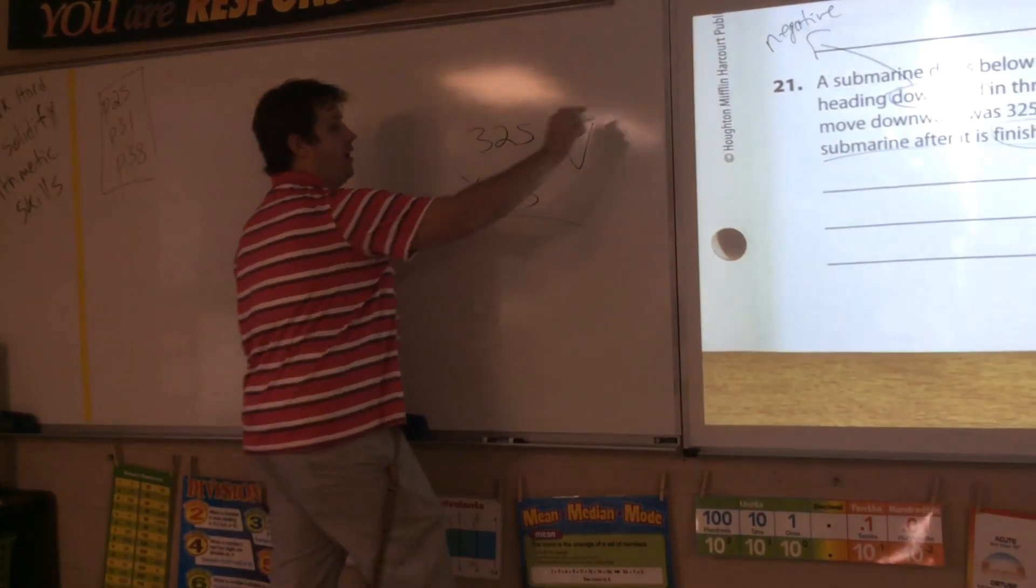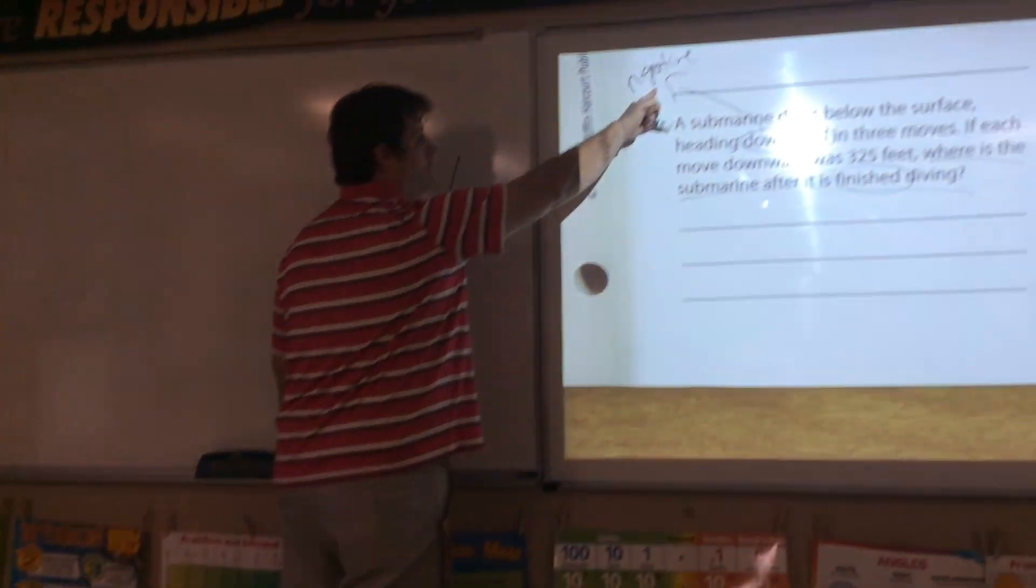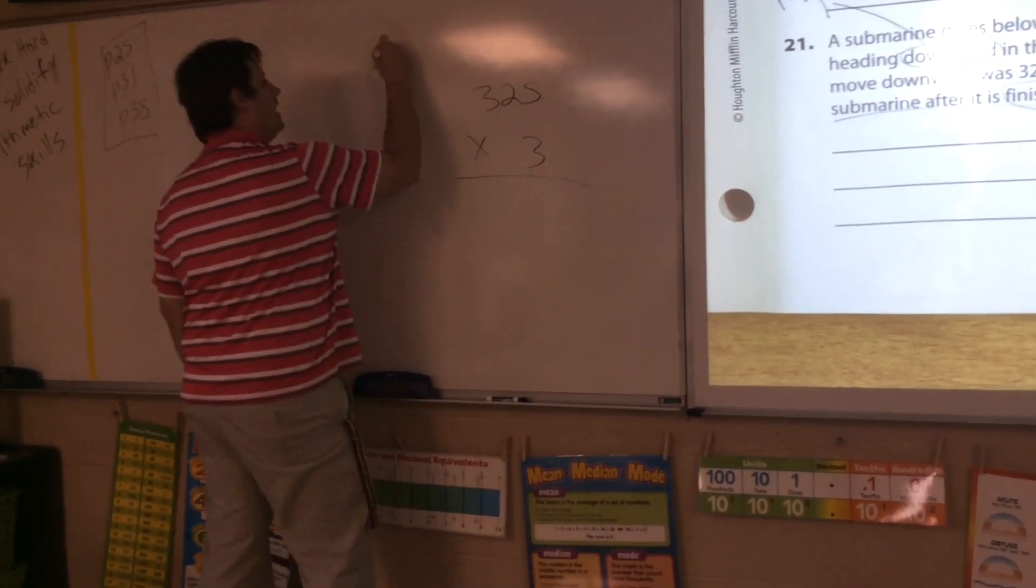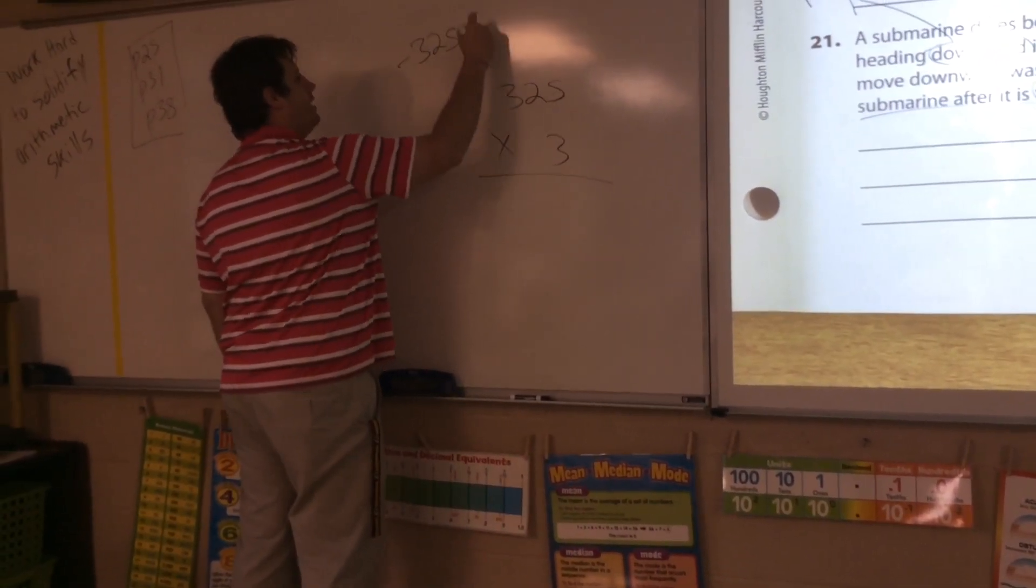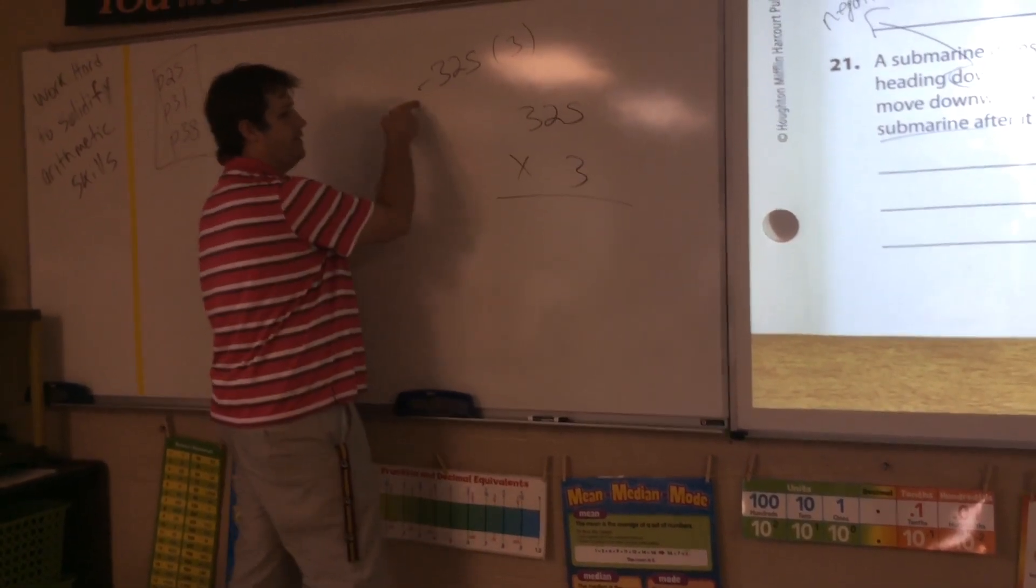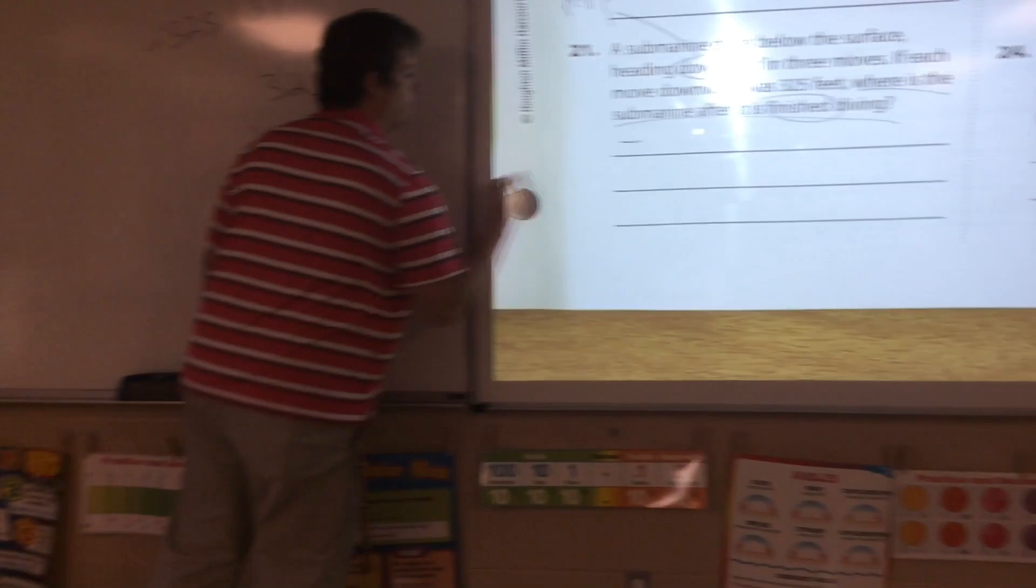Like I said a second ago, downward means negative. So, if I have a negative 325 and I'm multiplying it by three, according to my legal notes, that means my answer is going to be negative.